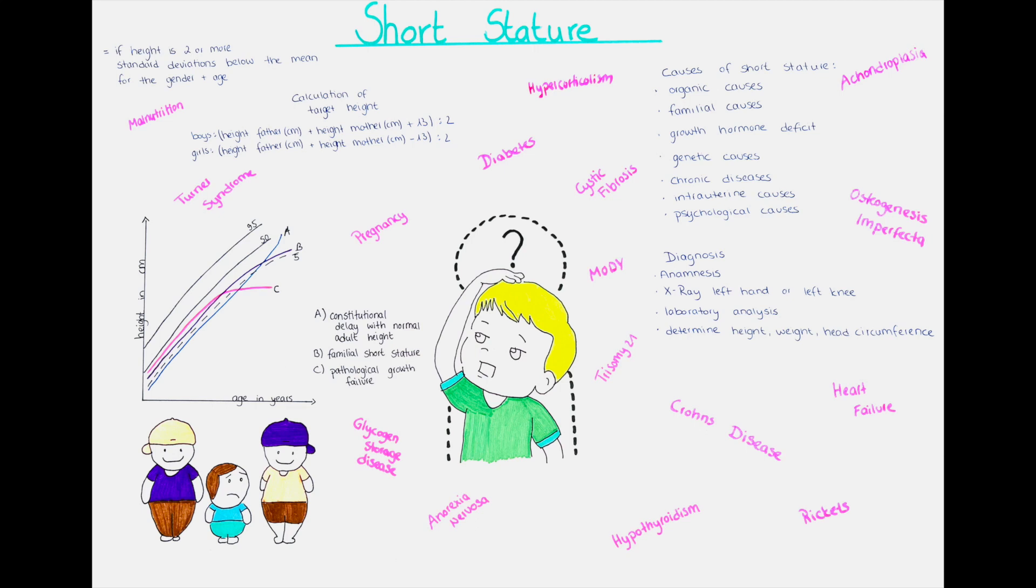Short stature can also be of psychosocial nature, so growth disorder that is due to a combination of psychosocial stress and disorders in behavior. It is generally a reversible state of abnormal growth based on an unfavorable environment.